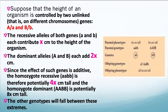The recessive alleles of both genes, little a and little b, each contribute x centimeters to the height of the organism. The dominant alleles, capital A and capital B, each add 2x centimeters to the individual. Since the effect of such genes is additive, the homozygote recessive is potentially 4x centimeters tall and the homozygote dominant is potentially 8x centimeters tall. The other genotypes fall between these extremes, which is why children from the same two parents can all be different heights — because dominant and recessive genes from different chromosomes have an additive effect on height.